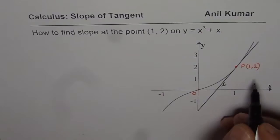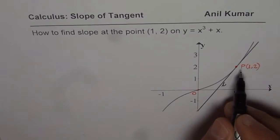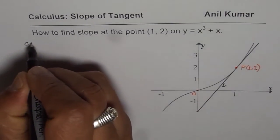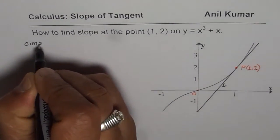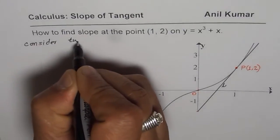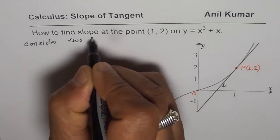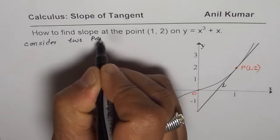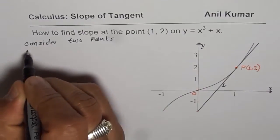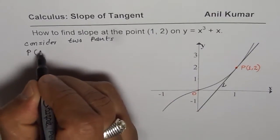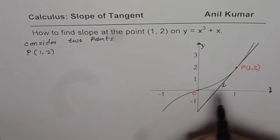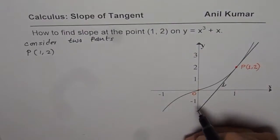Now to find the slope of a tangent line, we need to consider two points — that is very important. We already know one, which is P for us, and the point is (1, 2). How do you find the next point?